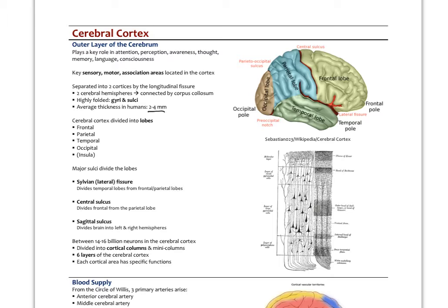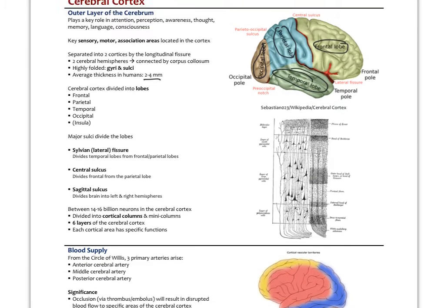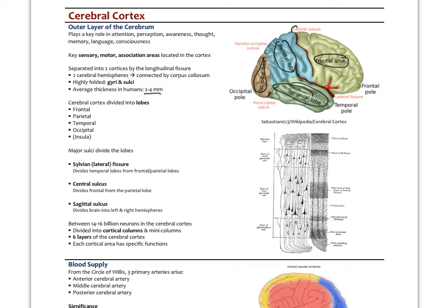We divide the cortex into lobes: a frontal lobe, a parietal lobe, an occipital lobe at the back, a temporal lobe, and deep down the insula if we peel away the temporal lobe. The limbic lobe lines the inner cerebrum, wrapping around the ventricles and corpus callosum. The lobes are divided by specific sulci: the central sulcus divides the frontal from the parietal lobe, the lateral fissure divides the temporal from the frontal lobe, and there's a parieto-occipital sulcus and a pre-occipital notch posteriorly.